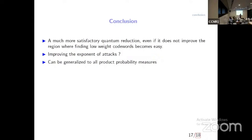Question: There is a result from Yamakawa and Zandri about an exponential speedup relative to random oracles where decoding arises in a similar way. Have you thought about applying the USD-type approach to the uncomputation part of that work, and whether it gives any advantages? Answer: No, I haven't thought about that — it's a good suggestion. Thank you, that was very interesting.